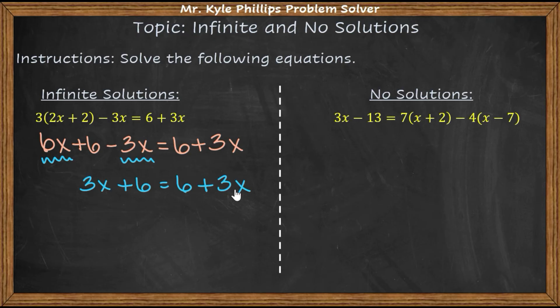It does not matter what number you plug in for x. Each side of the equal sign is going to be the same. This means there are an infinite number of solutions. So we can keep solving this algebraically to see what this would yield.